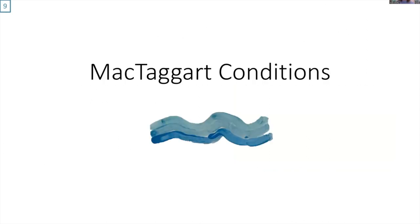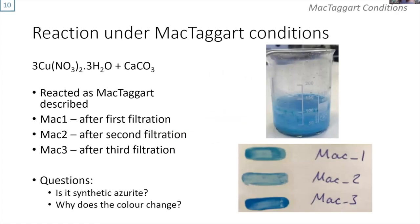After some trials, we managed to make it work and get the blue pigment. We added the copper nitrate solution and chalk, stirred intermittently, filtered, and that gave the Mach 1 product. We then added the Mach 1 product back in with more reactants, repeated for Mach 2 and Mach 3. We got a color change from a greenish blue pigment to a rich blue pigment.